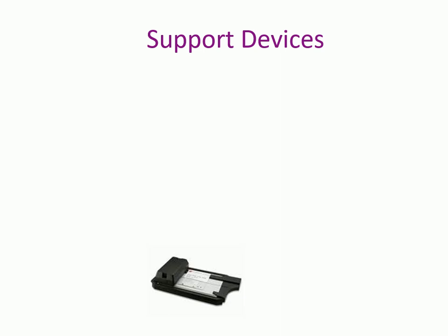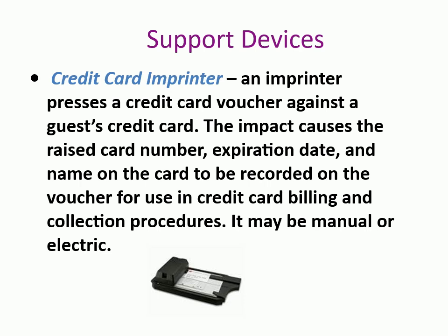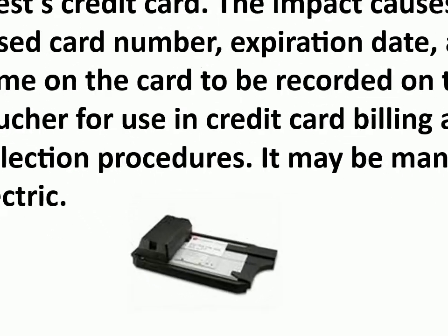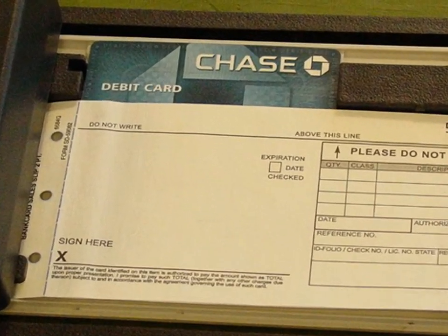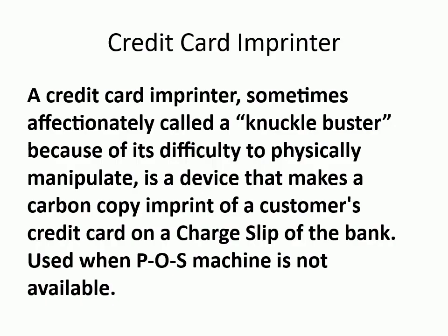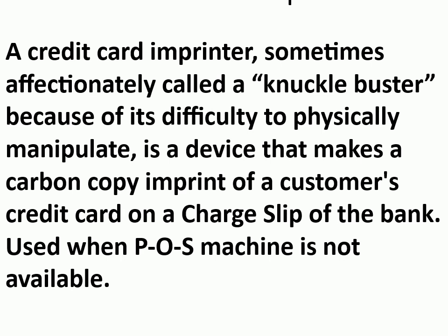Support devices — credit card imprinter: an imprinter presses a credit card voucher against a guest's credit card; the impact causes the raised card number, expiration date, and name on the card to be recorded on the voucher for use in credit card billing and collection procedures. It may be manual or electric. A credit card imprinter, sometimes called a knuckle buster because of its difficulty to physically manipulate, is a device that makes a carbon copy imprint of a customer's credit card on a charge slip of the bank. Used when a POS machine is not available.